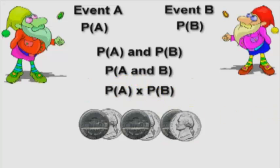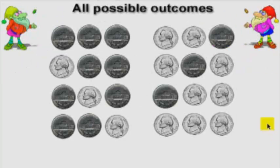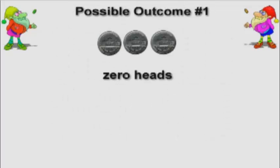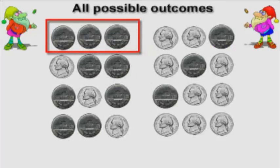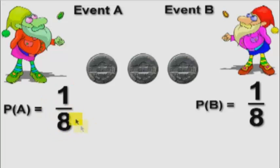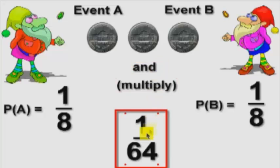Let's list all possible outcomes for three coin tosses. The first possible outcome is that they both get zero heads. There is only one way to get zero heads out of the eight possible outcomes, so the probability of getting zero heads is one out of eight for both guys. Since we want P of A and P of B, and 'and' always means multiply, we have a one in sixty-four chance they both get zero heads.